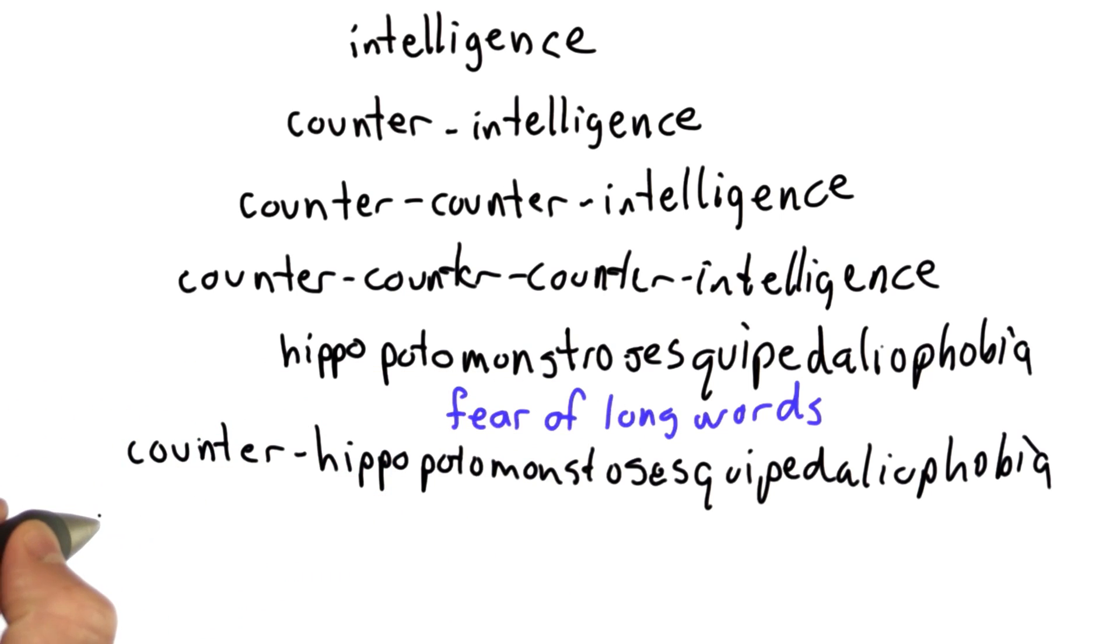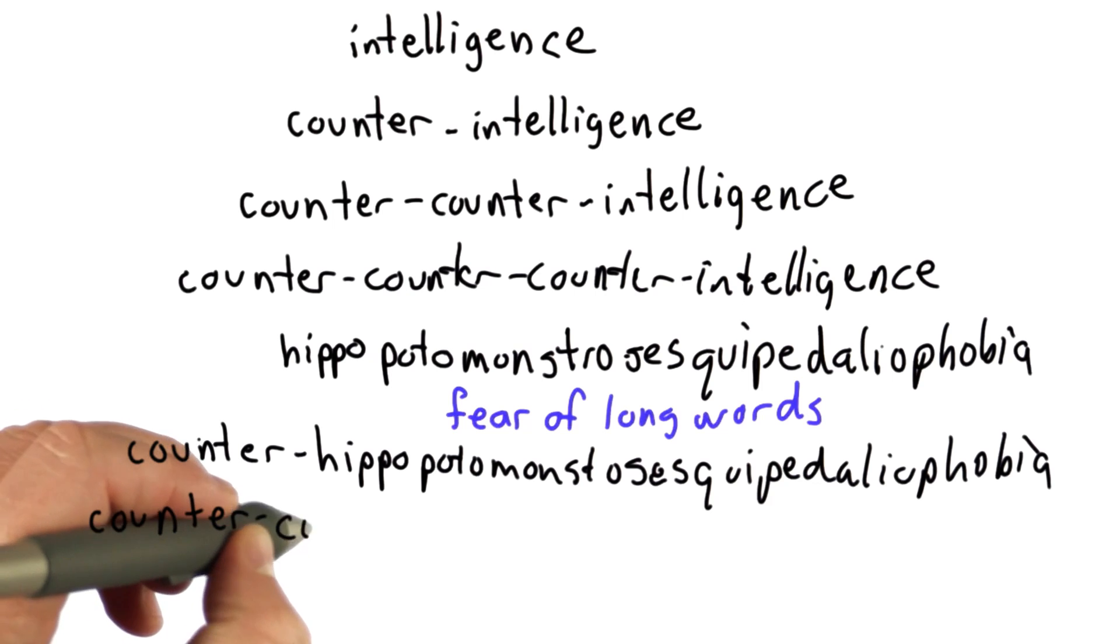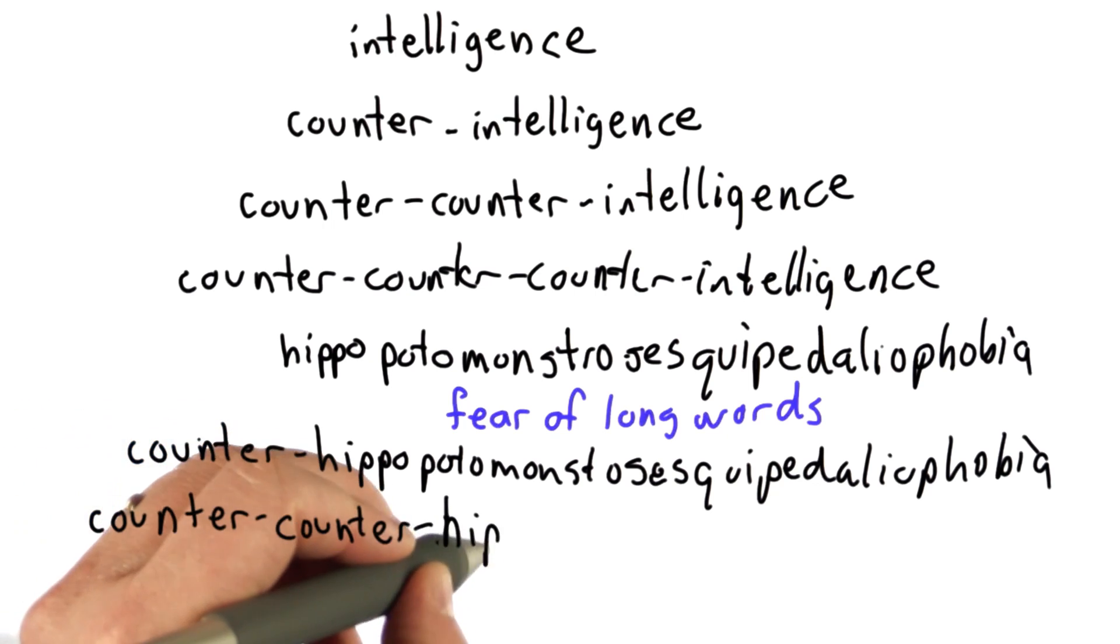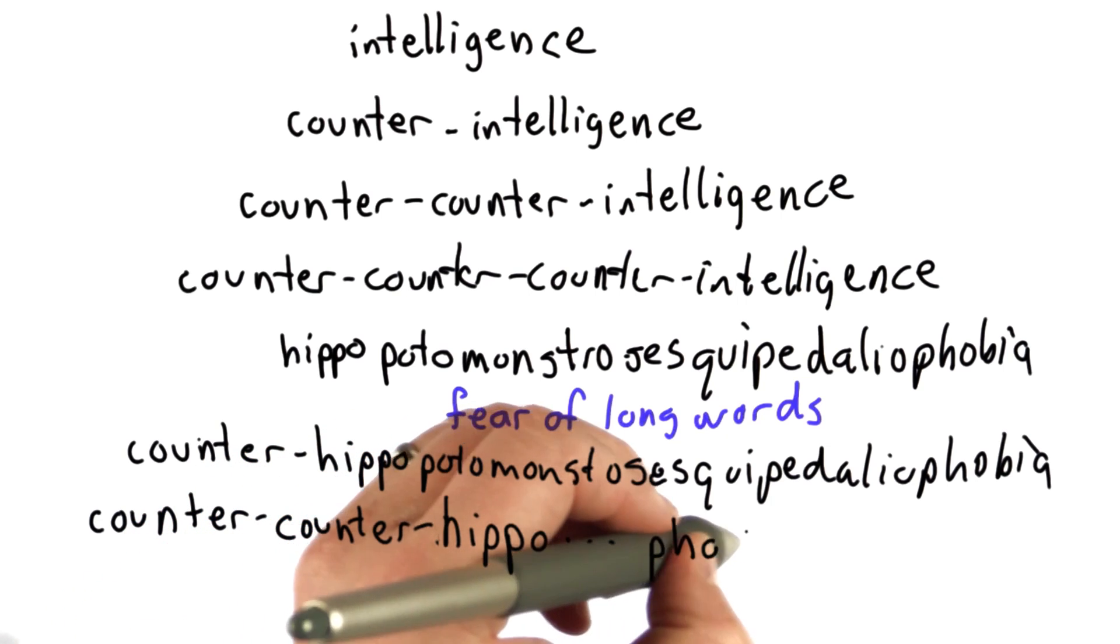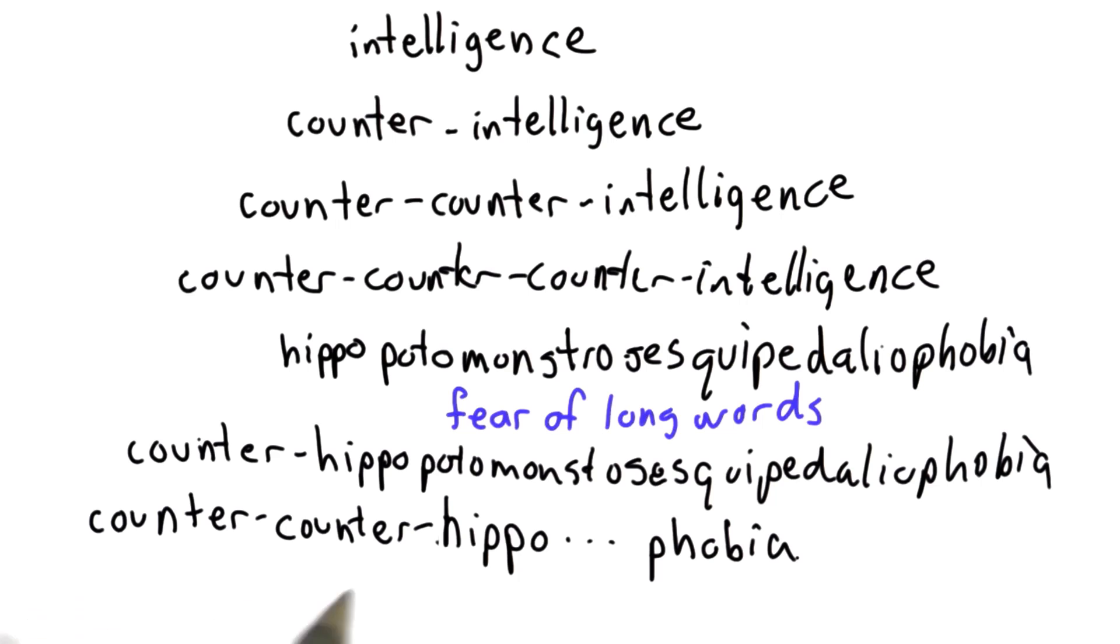And you could also figure out, well, if there was a counter-counter-hippo-and-so-forth-phobia, well that would be something that counteracts the counter-hippo. And that might be something where this new drug doesn't work if you have too much coffee. Then coffee would be a counter-counter-hippo-so-forth-phobia.